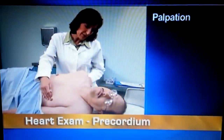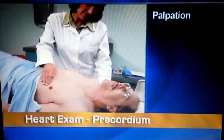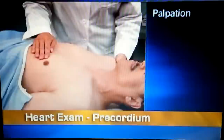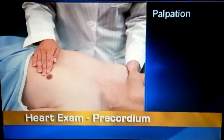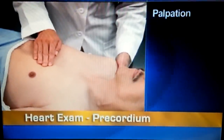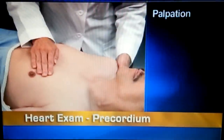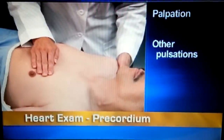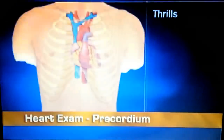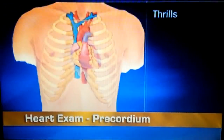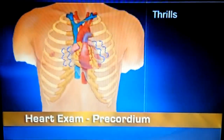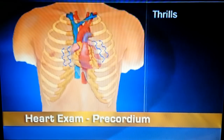Roll on your back, please. Using the base of your fingers, palpate the apex, left sternal border, and base, to detect any other pulsations. Normally, none occur. Note any abnormal pulsations, such as thrills, which are vibrations that feel like a purring cat's throat, and accompany loud murmurs.